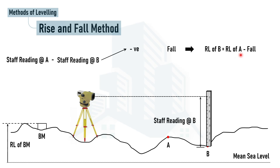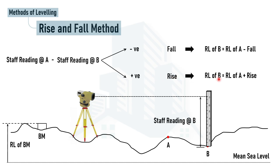The reduced level at point B equals the reduced level of point A minus the fall. Notice we use the reduced level of the previous point, not the benchmark. If it is a rise, the difference is positive and we add it. So: Reduced Level at B = Reduced Level at A ± Rise or Fall, depending on whether point B is higher or lower than point A.